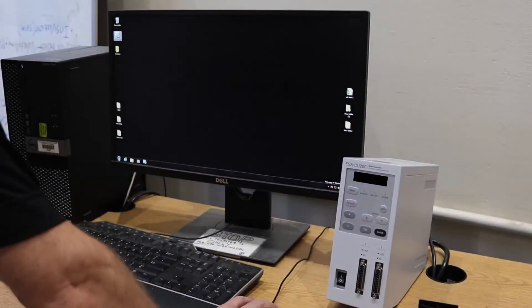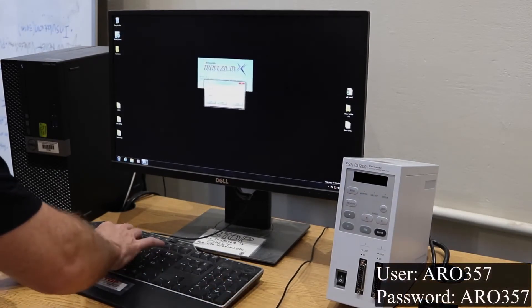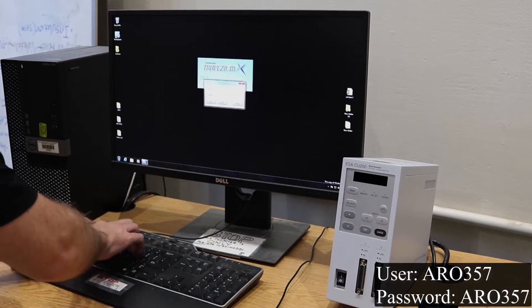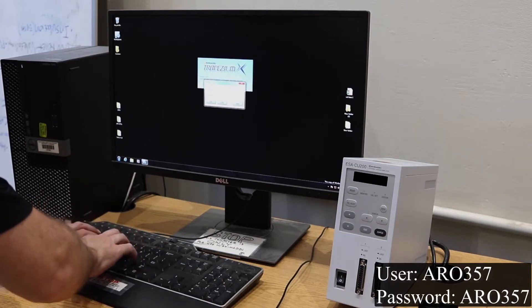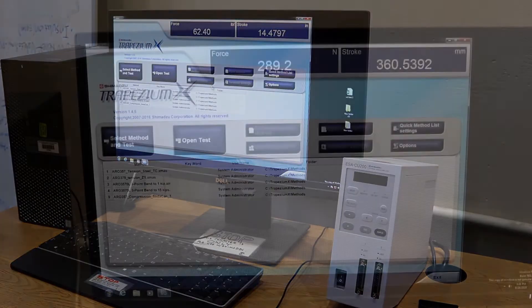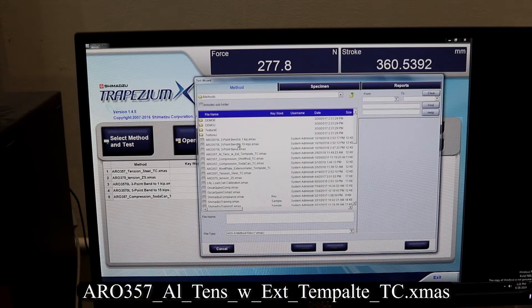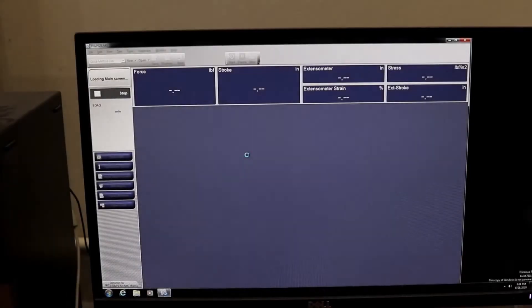Now we need to start the computer and open the test software. Now we click Select Method and Test. This will bring up a list of files for us to choose from. We select the file Arrow 357 Aluminum Tense with Extensometer Template TC.